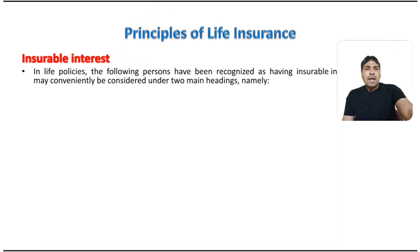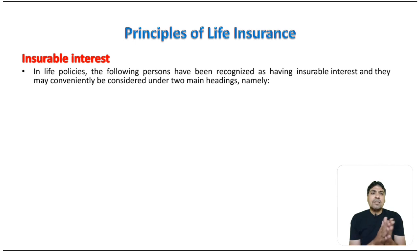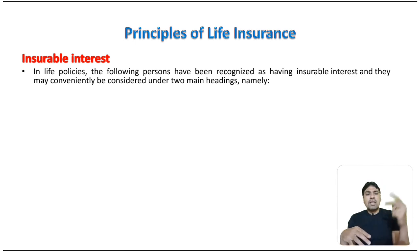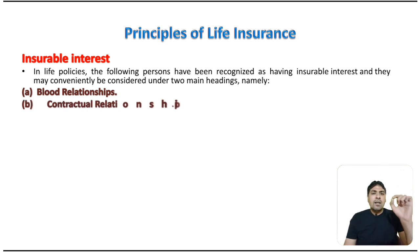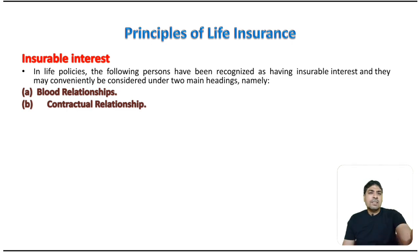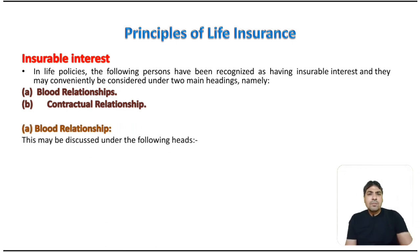In life policies, the following persons have been recognized as having an insurable interest and they may conveniently be considered under two main headings. The first one is blood relationship, and the second is contractual relationship.